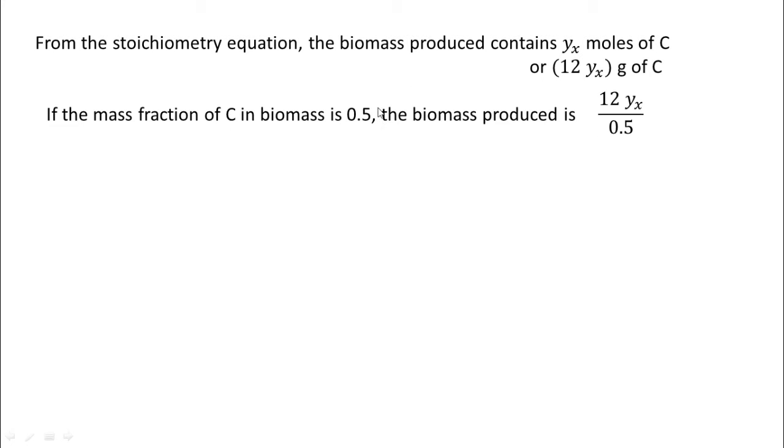This is unitary method. It might appear a little odd in the beginning, but it is just unitary method. The mass fraction is 0.5. If 1 contains 0.5, how much will 12Y_x contain? In other words, if 0.5 C in biomass corresponds to 1 biomass, how much would 12Y_x grams of C correspond to? That will be 12Y_x by 0.5. If 0.5 is 12Y_x, what is 1? That is the unitary method that we used to get this particular expression here. Just go ahead and practice this.